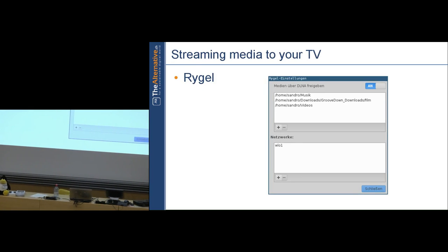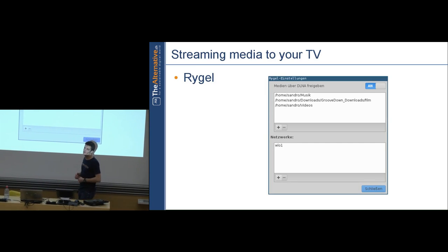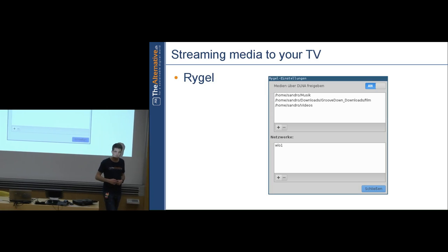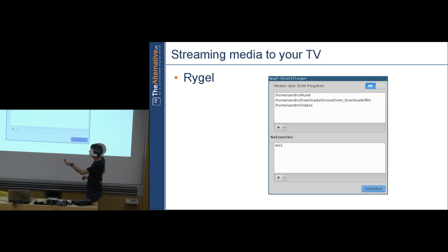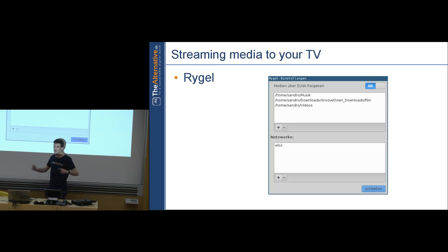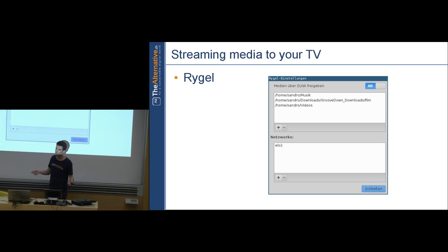Rygel is a DLNA server — if you have a DLNA-capable TV, install Rygel, specify what to share, set your wireless interface, and your TV will see your laptop as network storage and stream directly from it. A good wireless connection is important; wired is better for high resolutions.